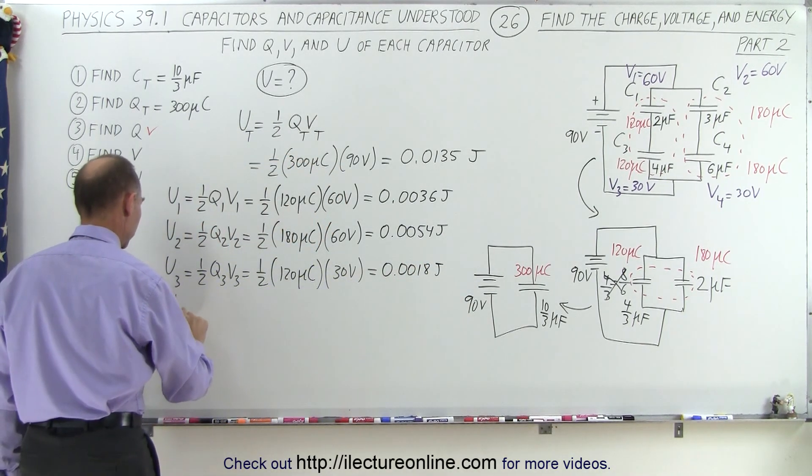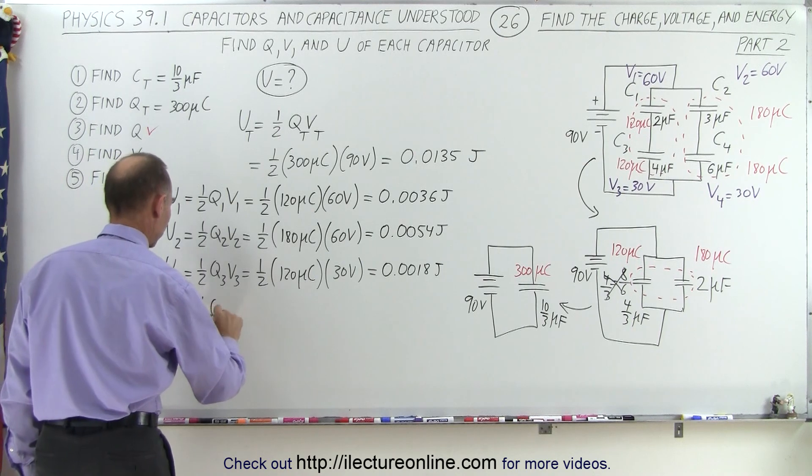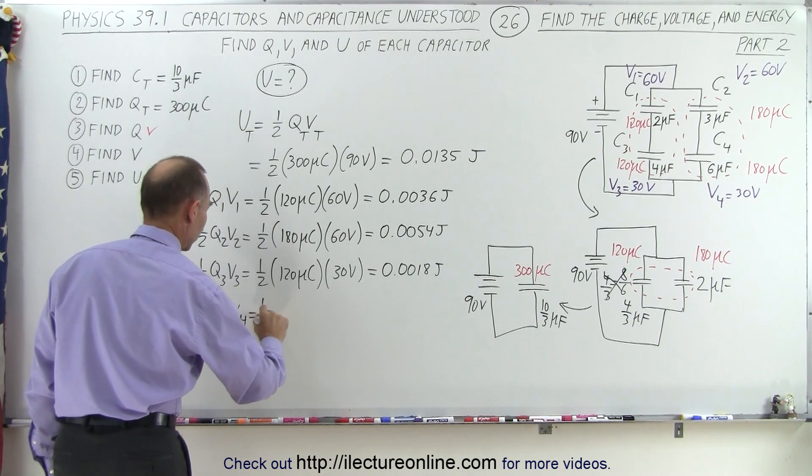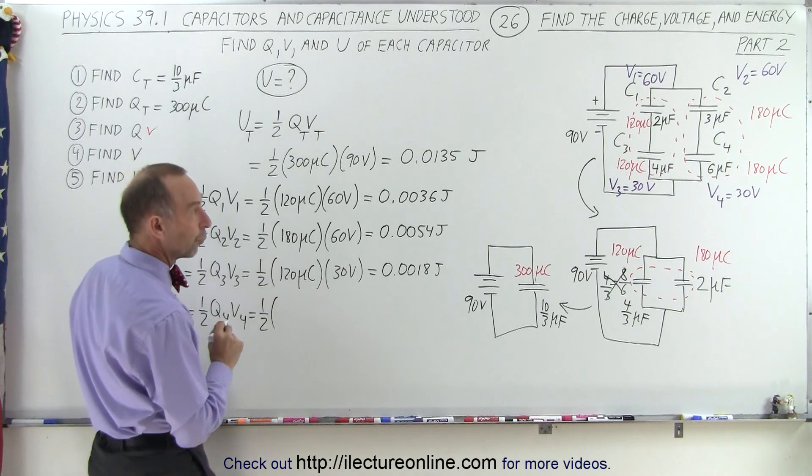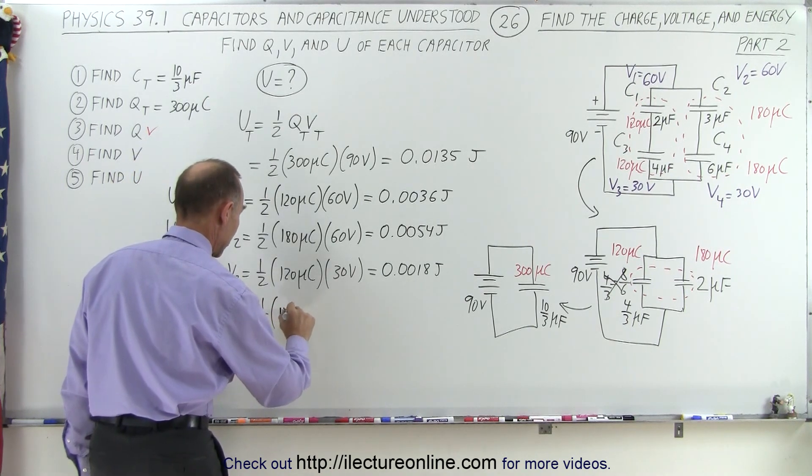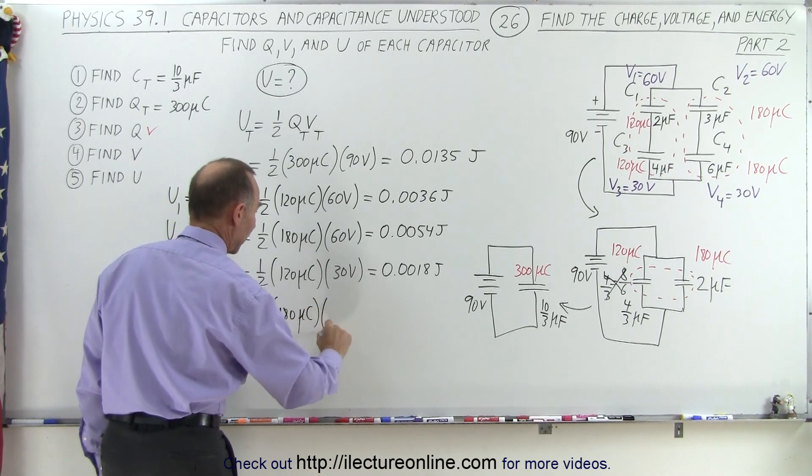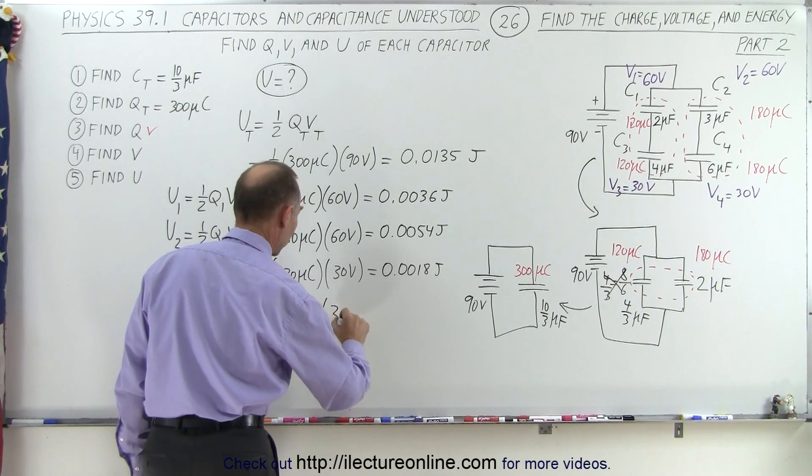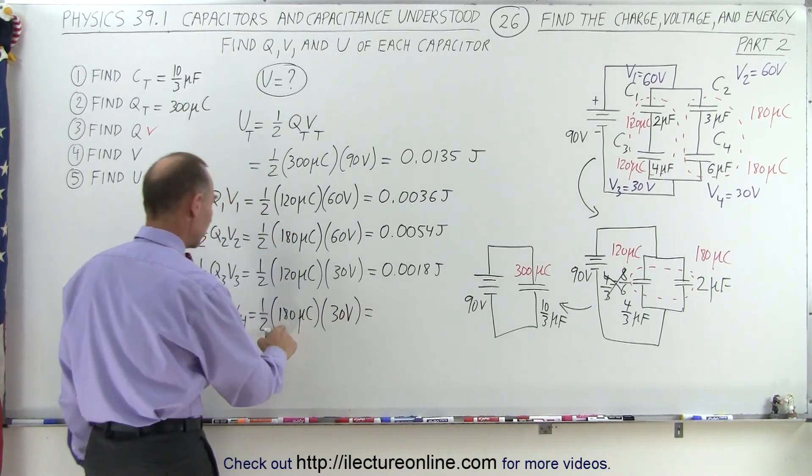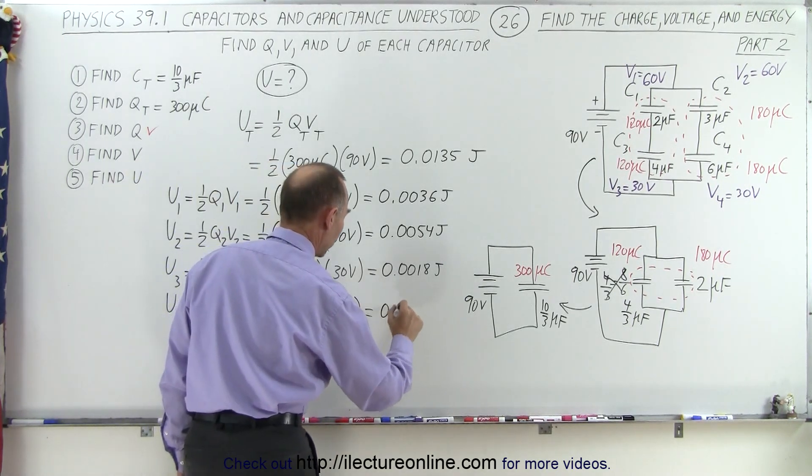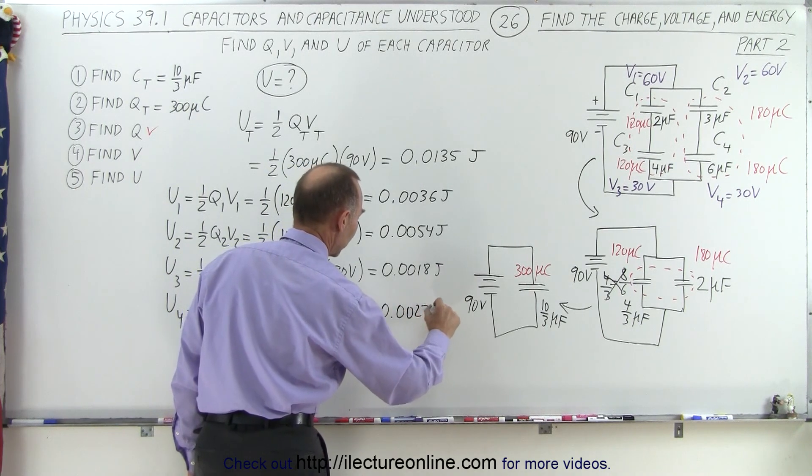And U4, the energy on the fourth capacitor is one-half Q4V4, which is one-half. Q4 is 180 microcoulombs, and the voltage on that one is also 30 volts. That would be 0.0027 joules.